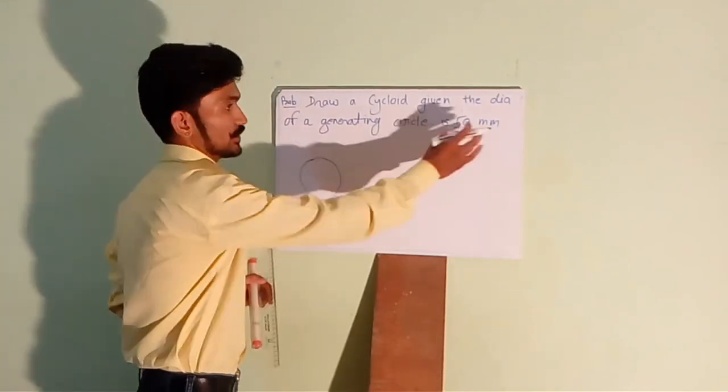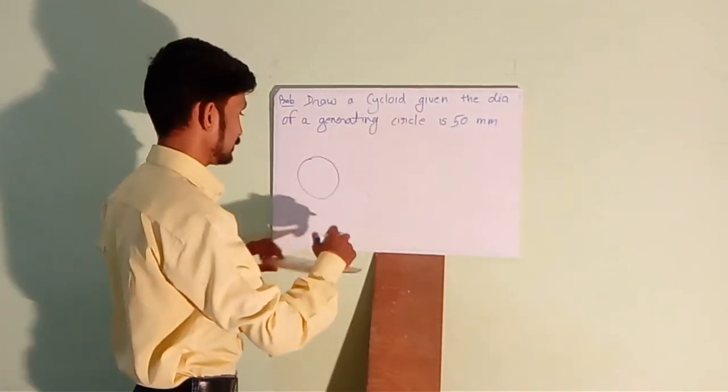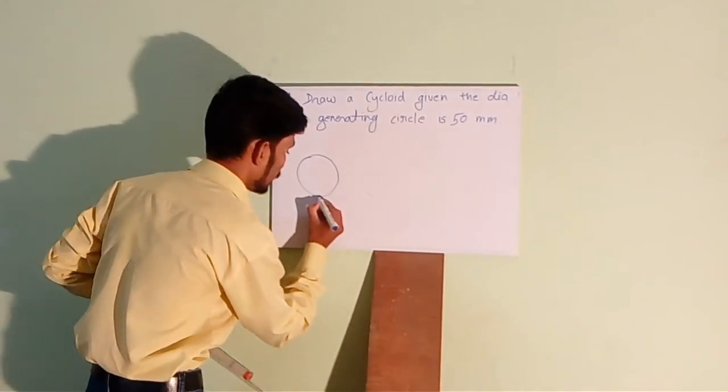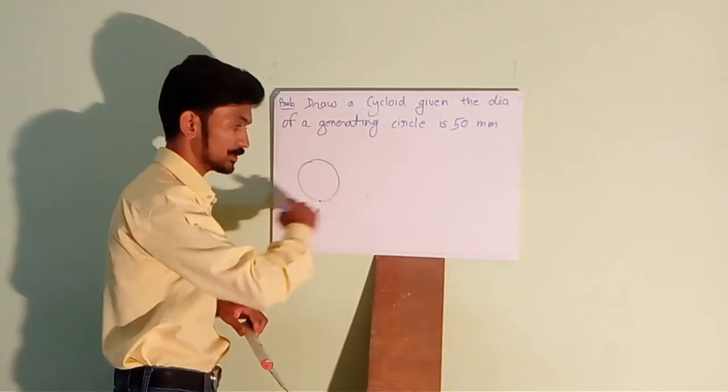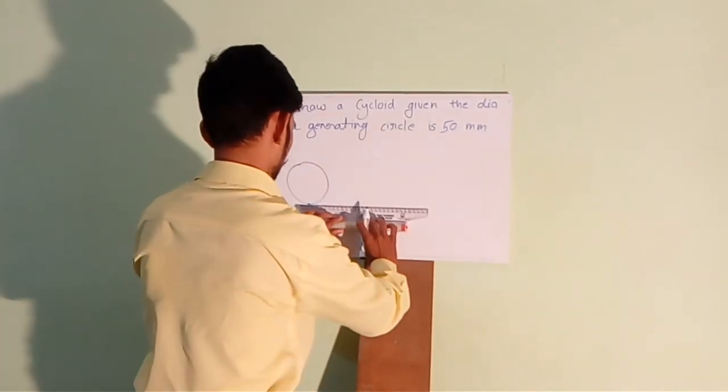This is the circle of a diameter of 50mm and then mark a point P which is in contact to the surface and draw a line.